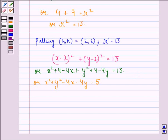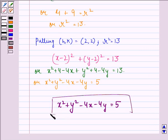Our answer to this question is x² + y² - 4x - 4y = 5. This is our answer to the question.